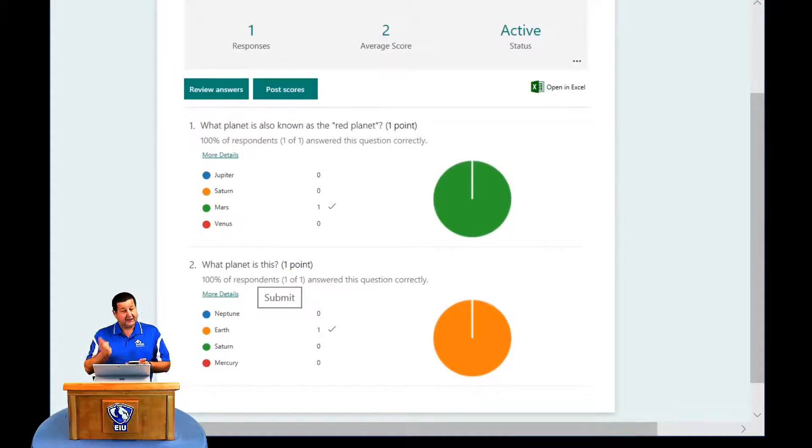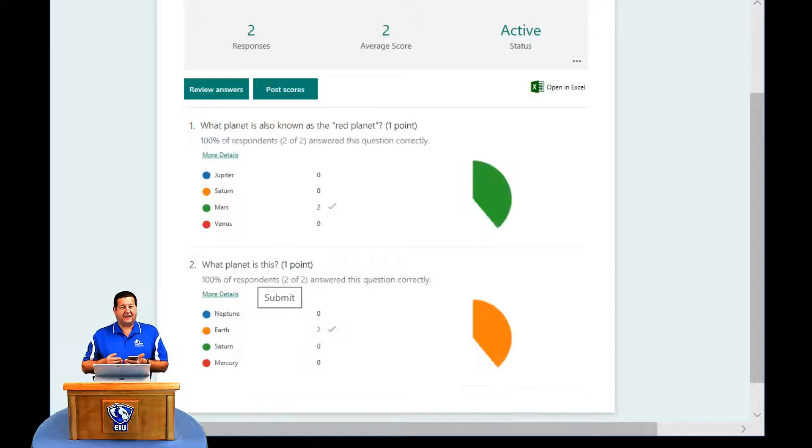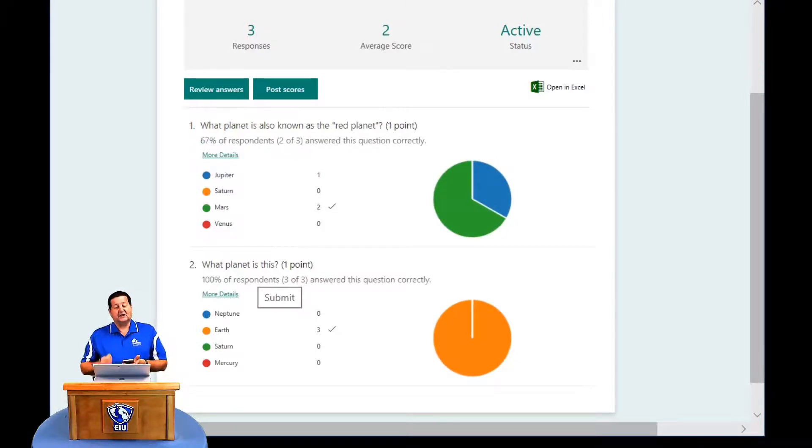Here we can see in near real time, this is the output of our Microsoft form. So we've got one vote in essentially. Let me add a second vote here with my form. And let me get this correct. Mars, Earth. And whenever I hit submit, within a matter of a couple of seconds, we're seeing in near real time. Let me go ahead and just to prove to you that this is in near real time, let's submit another response. But this time I'm going to miss the first one. I'm going to say that's Jupiter. And the second question, I'm going to continue to get right. That's Earth. And whenever I press submit, you'll be able to see the pie chart. Now we have a total of three votes. And you can see the total right here.